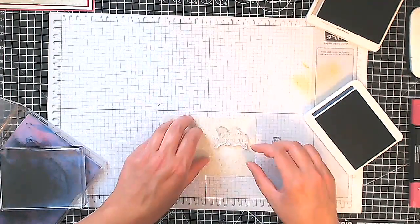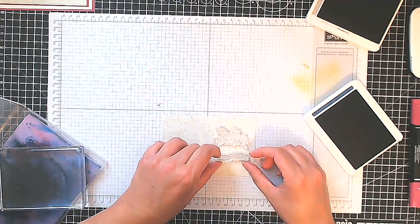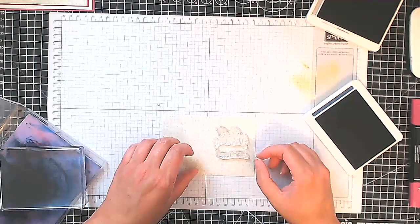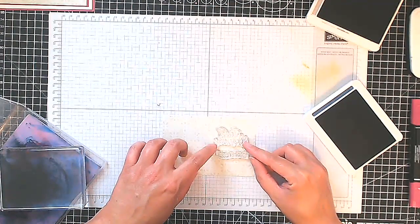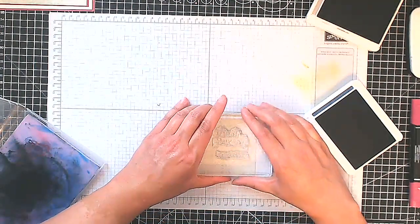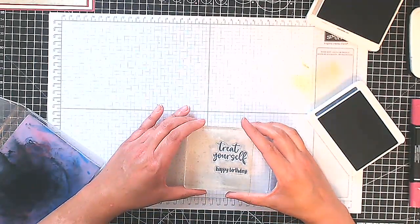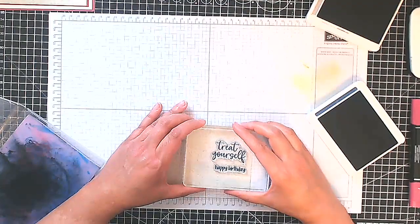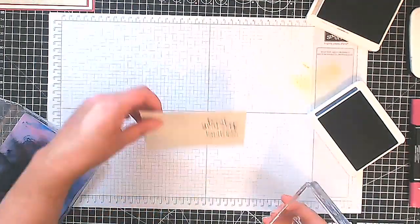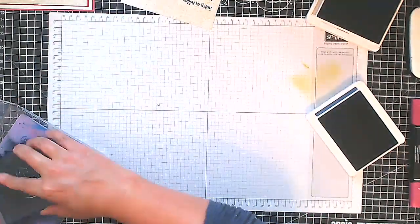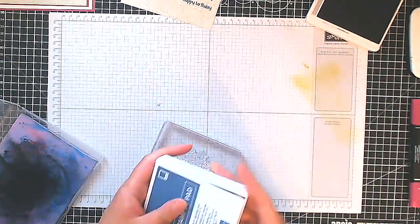Now I'm just deciding what I want to put in my trolley. I am going to stamp my sentiment here and I'm going to stamp two parts of the sentiments: treat yourself, happy birthday. I'm just using my grid paper to line everything up nicely.